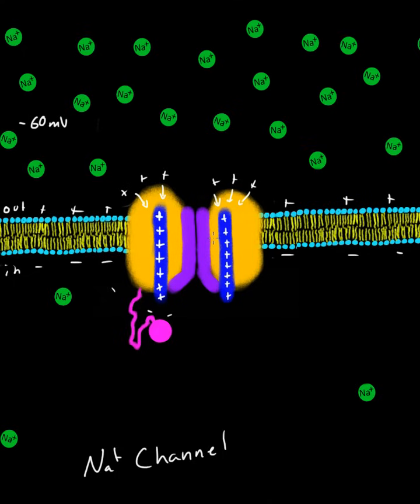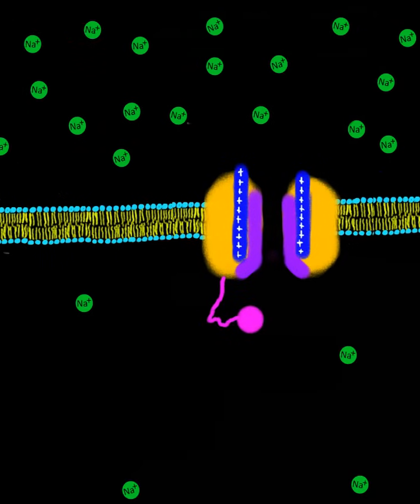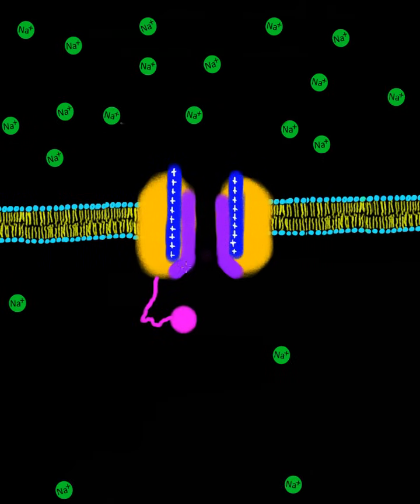So what would happen if for some reason the voltage across the membrane was zero millivolts. That would allow these blue rods to begin climbing. So they would go up. And as they went up, the activation gate could open.